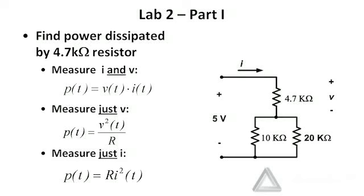In part one of lab two, we have a resistive network which contains a 4.7 kiloohm resistor, and we want to find the power dissipated by that particular resistor. Power is voltage times current by definition. For resistors, we could measure just the voltage and use P = V² / R, or we could measure just current and use P = R × I². You have to be careful that you're actually measuring the parameters that are appropriate for the resistor you want to examine. I'll do a demo of a different resistive network in which I'm measuring voltage and current for a single resistor in that network.